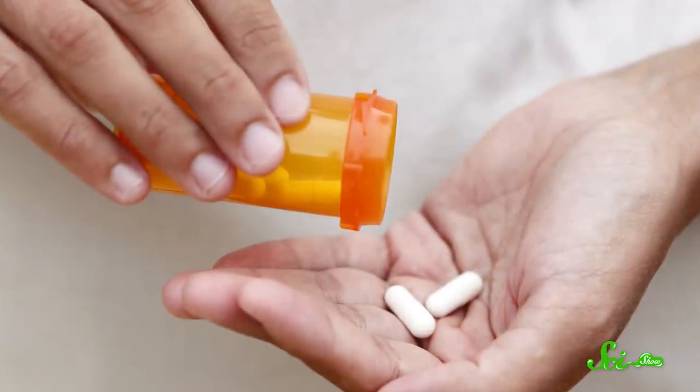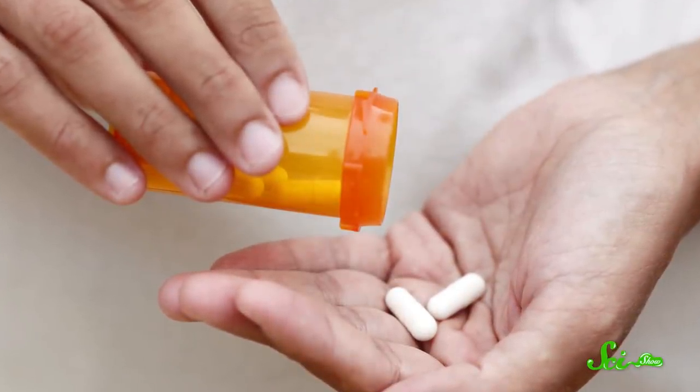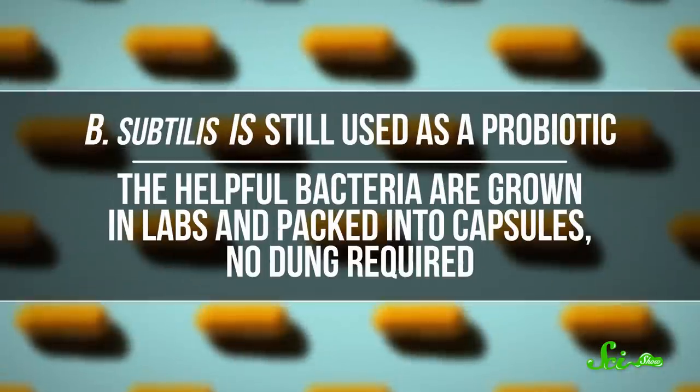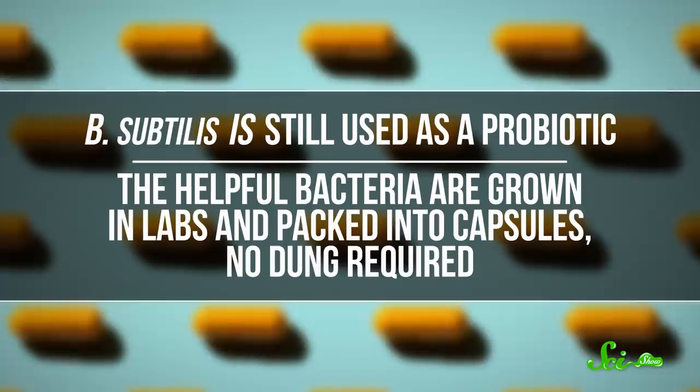Of course, nowadays, severe bacterial dysentery is usually treated with a course of basic antibiotics rather than a spoonful of camel poop. Though, B. subtilis is still used as a probiotic. The helpful bacteria are grown in labs and packed into capsules.